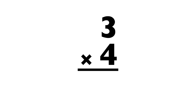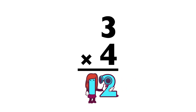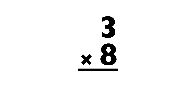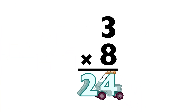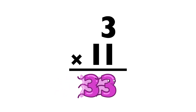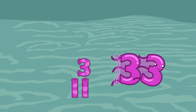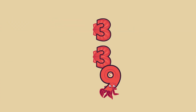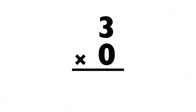Three times four equals — twelve. Three times eight equals — twenty-four. Three times eleven equals — thirty-three. Three times three equals — nine. Three times zero equals — zero.